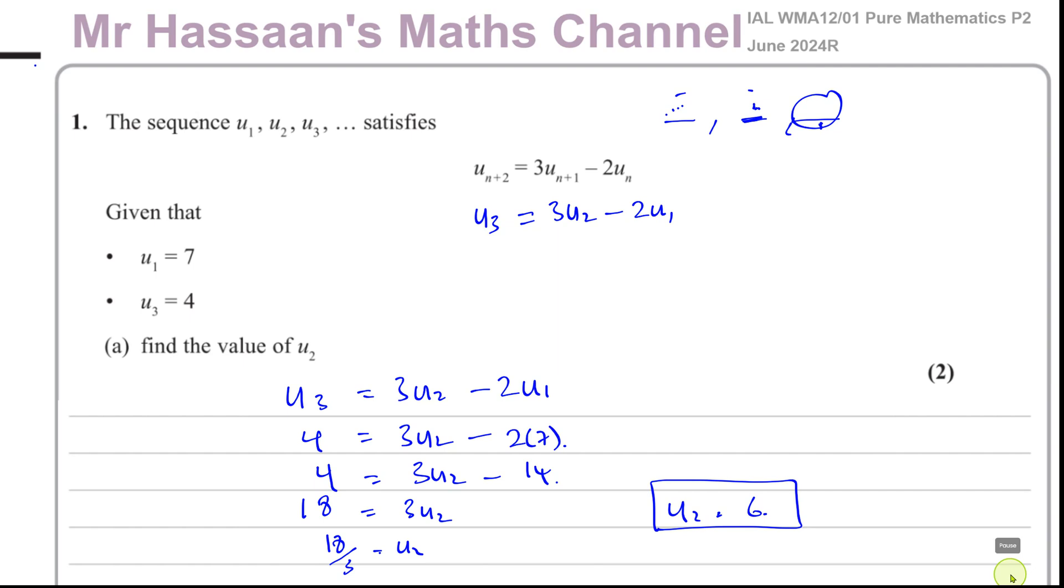Okay, so now for part B, it says find—and this sigma, this sign, the sigma means the sum of—all of the expressions given by uᵣ plus 2r from r equals 1 to 4. Basically, when r equals 1, what we're going to have is uᵣ, when r equals 1, u₁ would be 7. So this is basically saying u₁ plus 2 times 1. That was when r equals 1.